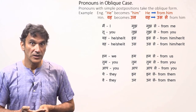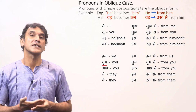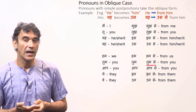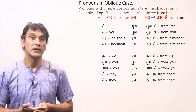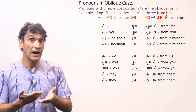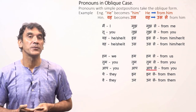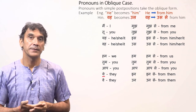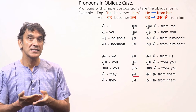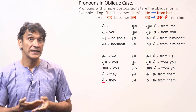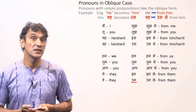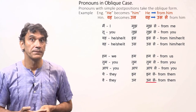तुम also stays 'तुम' — 'तुम से' means 'from you'. आप (you) also does not change in oblique case — 'आप से' means 'from you'. यह (they) becomes 'इन' with the postposition — 'इन से' means 'from them'. वे (they) becomes 'उन' with the postposition — 'उन से' means 'from them'.